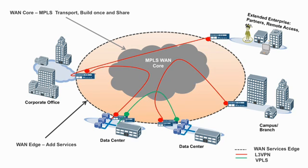The MPLS WAN core that provides the shared transport needs to be built once. Multiple VPN services can be added on to the WAN services edge as and when necessary. This introduces both scalability and flexibility into your private WAN infrastructure. MPLS and VPNs based on logical network partitioning allow secure, trusted connectivity without requiring encryption between locations. MPLS and VPN services can also extend connectivity of resources from a single site across multiple sites and functions of your enterprise.